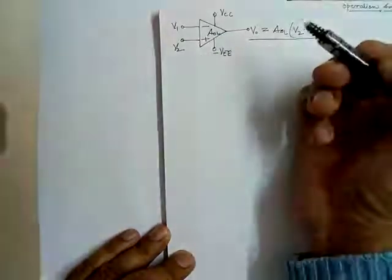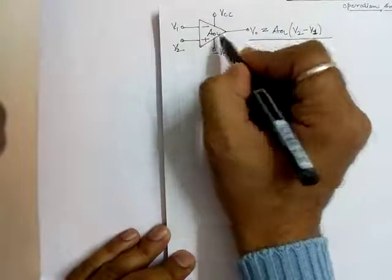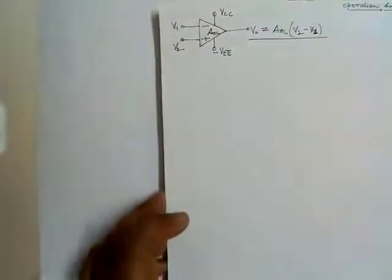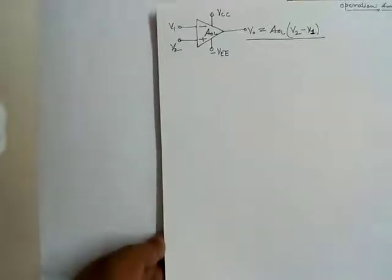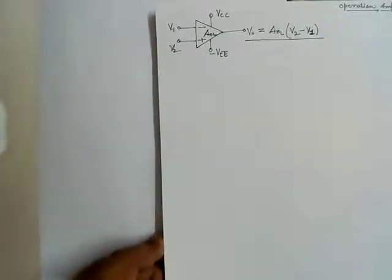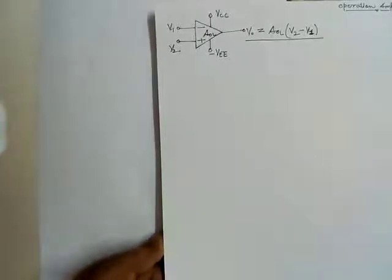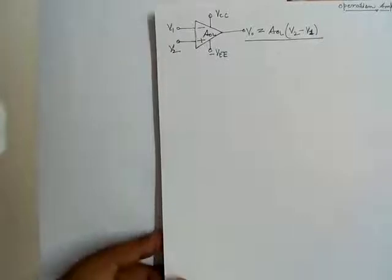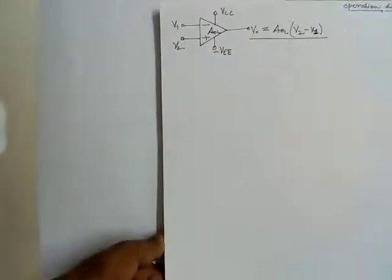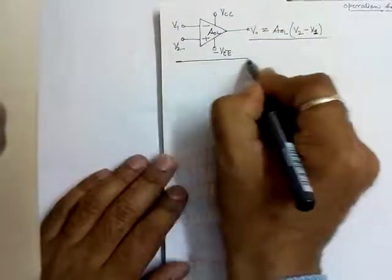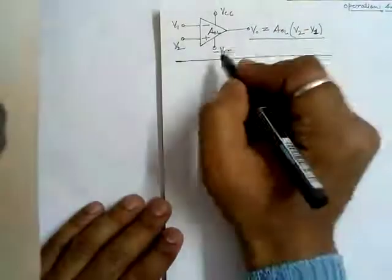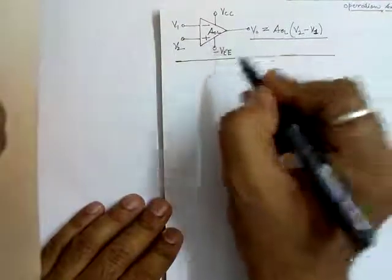For a transistor, DC biasing is important because it keeps the transistor in a particular zone. For a BJT used as an amplifier, it must be in the active region. This concept has been discussed many times. This was the previous lecture revision.